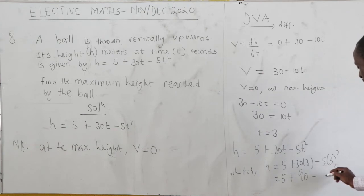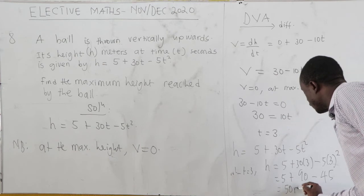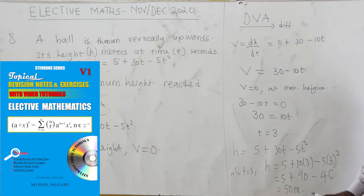5 times 9 equals 45. So 5 + 90 - 45 = 50 meters. The maximum height is 50 meters.